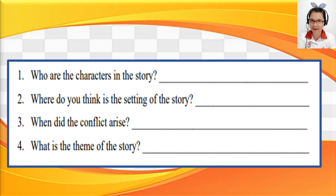Now let's answer the four questions. Number 1: Who are the characters? The characters are the hare, the tortoise, and the fox. Number 2: What is the setting? Maybe the forest where the hare and the tortoise are racing. Number 3: When did the conflict arise? The conflict arose when the hare was making fun of the tortoise for being so slow. Number 4: What is the theme? The theme is 'the race is not always to the swift,' or 'slow and steady wins the race.'